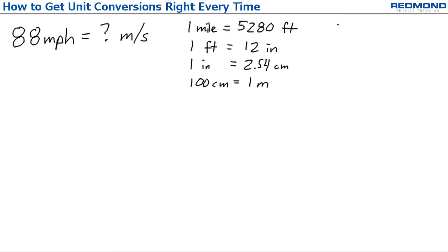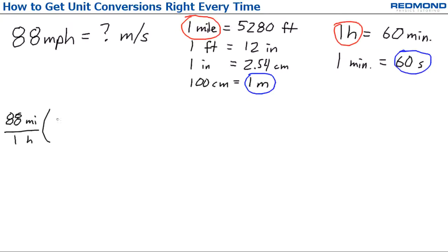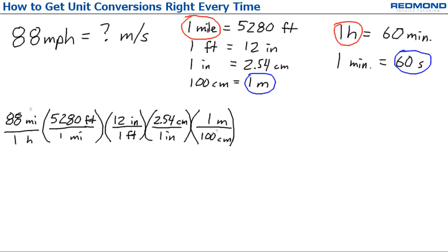Then I'll do hours. So one hour is 60 minutes, and one minute is 60 seconds. Notice that I start with miles and hours and end with meters and seconds, which is what we want. So I put 88 miles over one hour on the left, and then start filling in the conversion factors. I put miles on the bottom to cancel it out with feet on top. Then feet on the bottom for the next one and inches on top. Then inches on the bottom and centimeters on top, then centimeters on the bottom and meters on top. That converts the miles to meters.